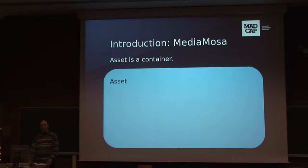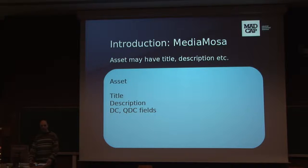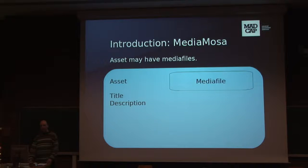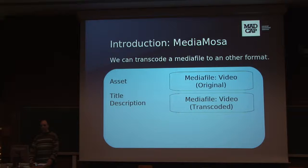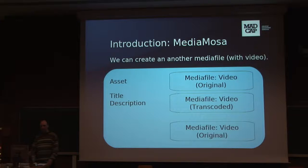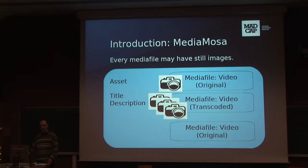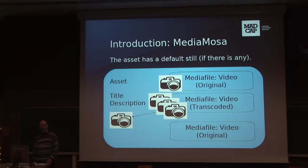A short introduction about MediaMosa and its main elements. MediaMosa stores assets. An asset is a container where you can store title, description and other fields. An asset may have one or more media files. A media file may have a video with a codec, file size, and duration. You can transcode the media file to another format — then you have an original video and a transcoded one. You can also upload another media file, giving you two originals and one transcoded. You can easily create one or more still images from the videos and set one of them as the default.